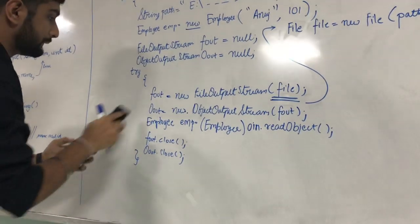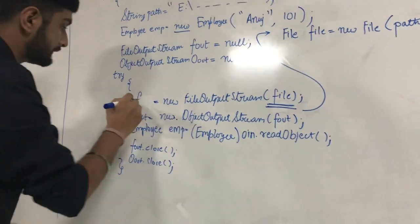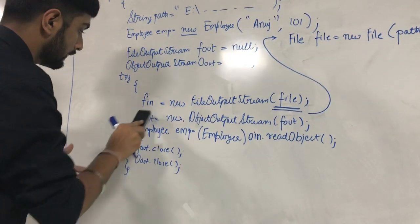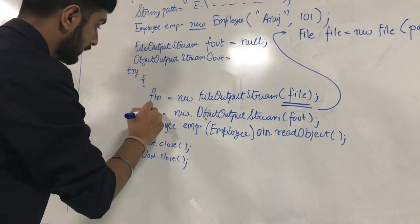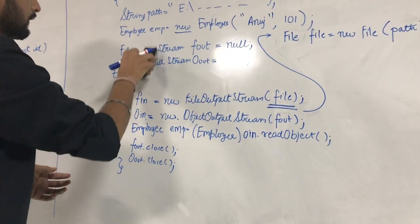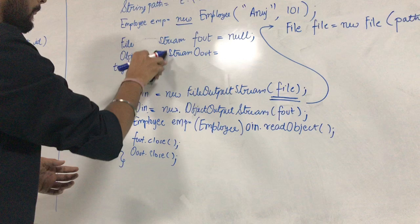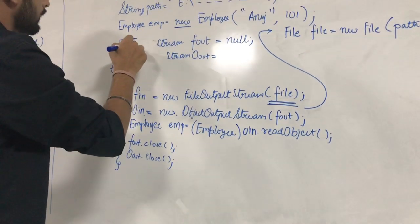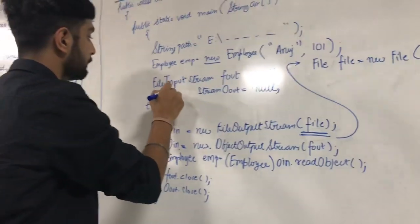So, likewise we will do the changes here as well. This will become fin, this will become oin, and this output will become input.